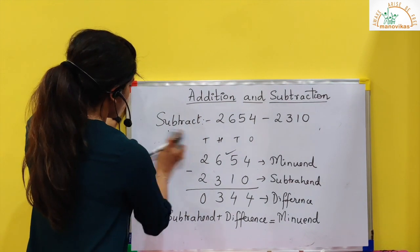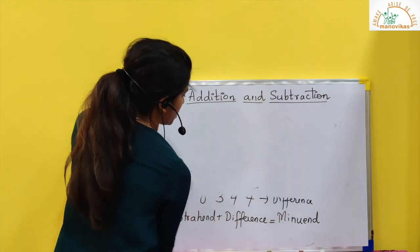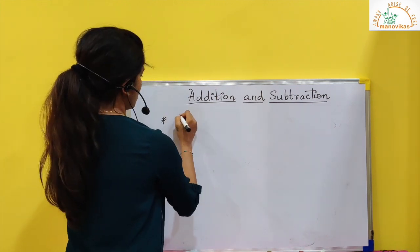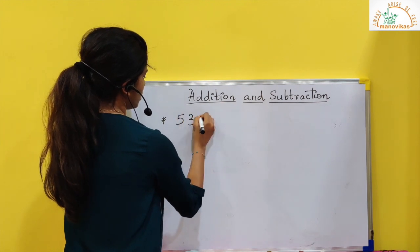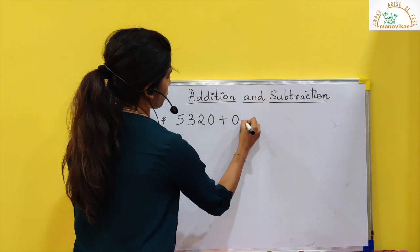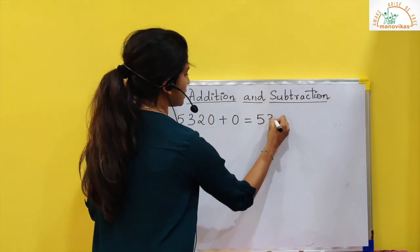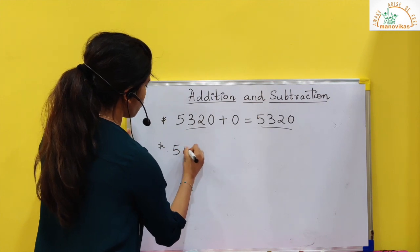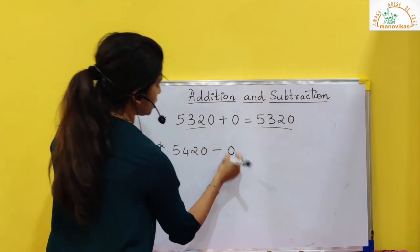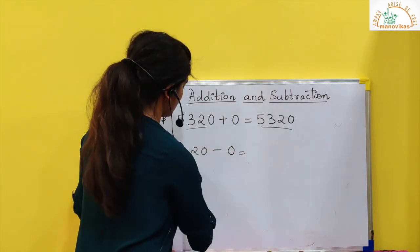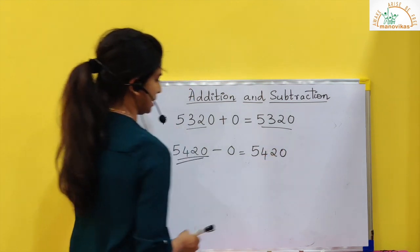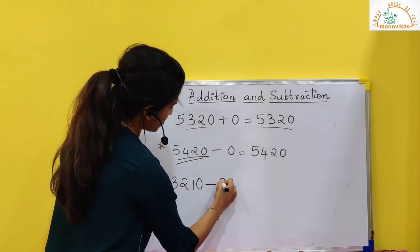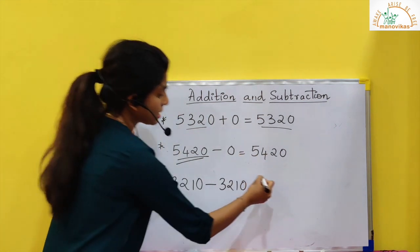Now in addition and subtraction you should know a few rules. First rule: if I have a number like 5, 3, 2, 0 and I add 0 to it, I will get the number itself. If I want to subtract 0 from 5, 4, 2, 0, I will get the number itself — that is 5, 4, 20. If I want to subtract 3, 2, 1, 0 from 3, 2, 1, 0, I will get 0.